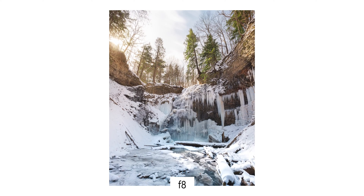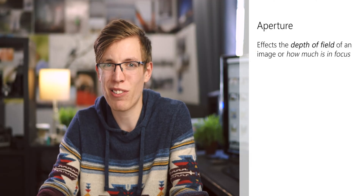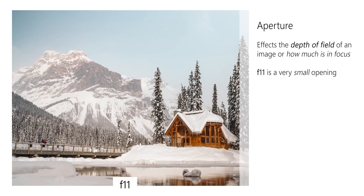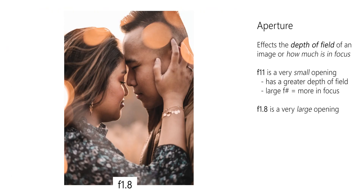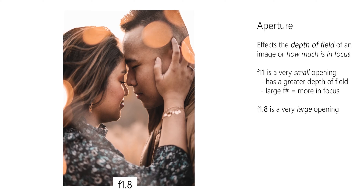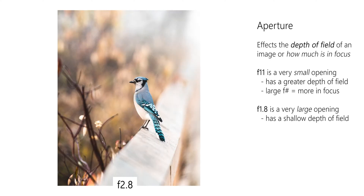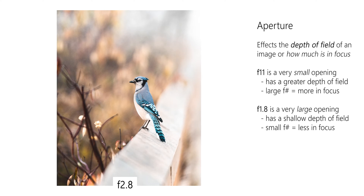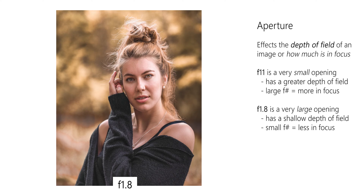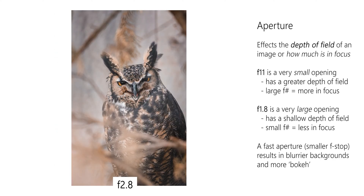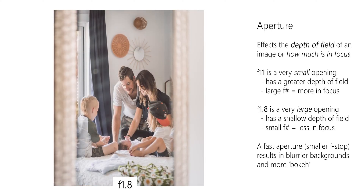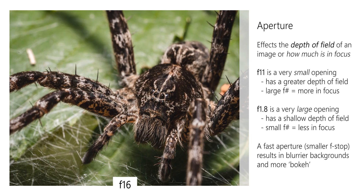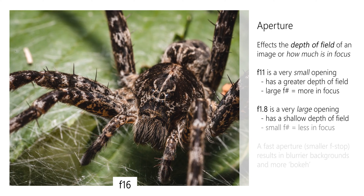Aperture also controls your depth of field — how much of the image is in focus. A smaller hole like f/11 results in much more of the image being in focus, whereas a large aperture like f/1.8 creates a much shallower depth of field, meaning your background can be very blurry — that coveted bokeh a lot of people are after. This is one of the most fun settings to play with because it produces that high-end looking photo.